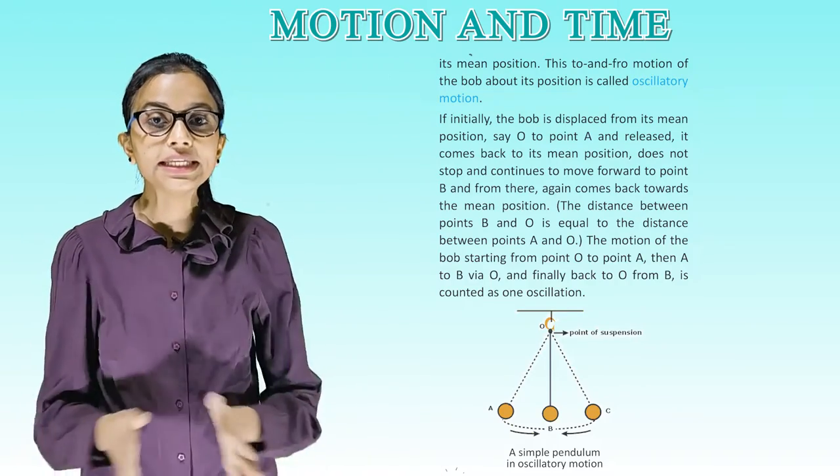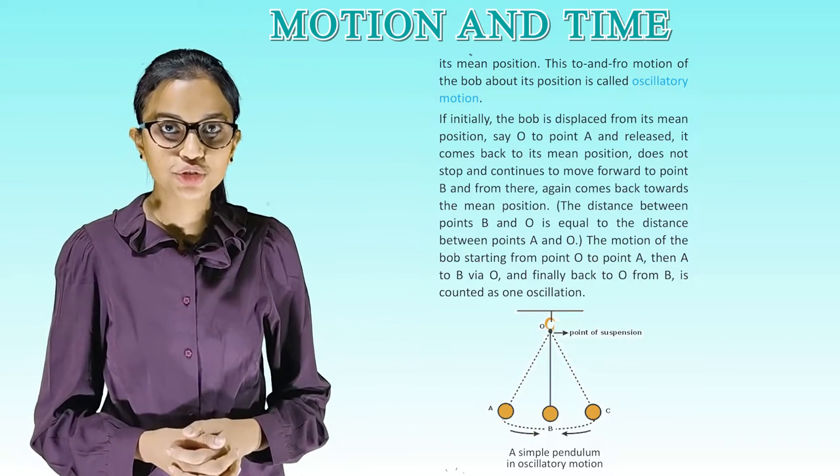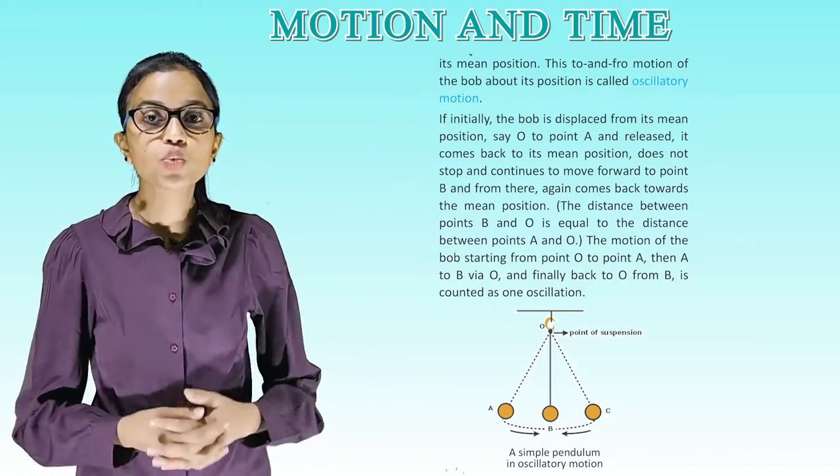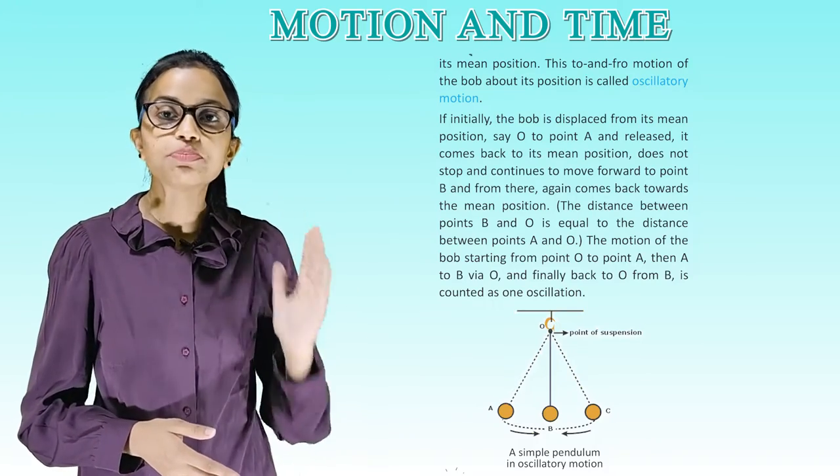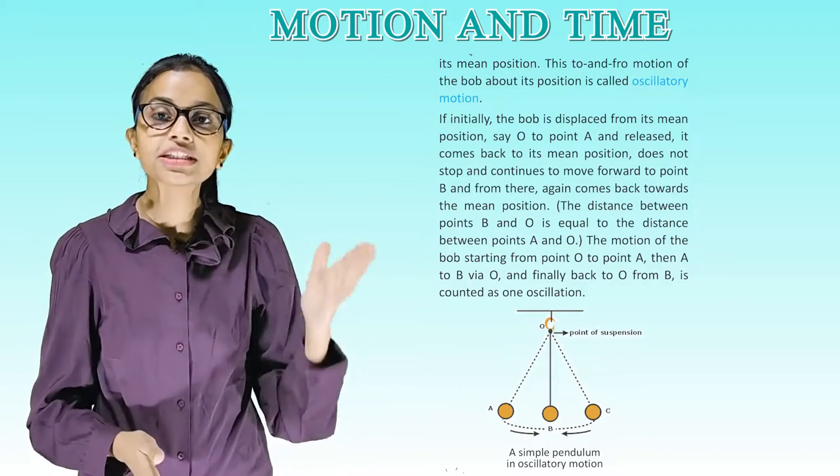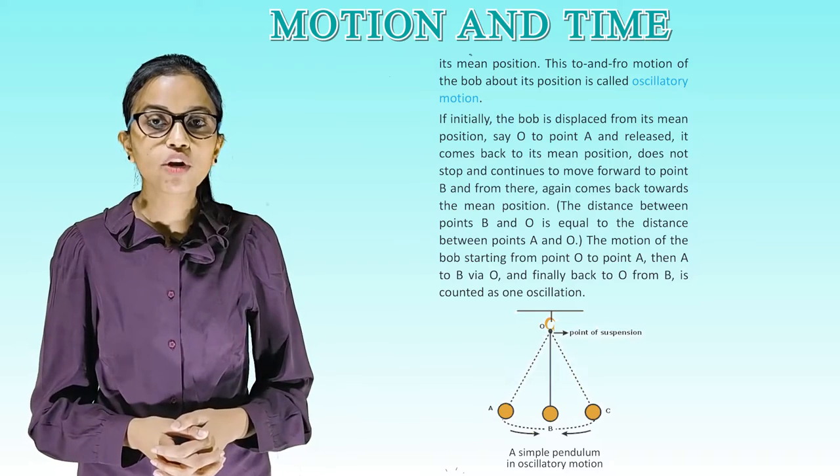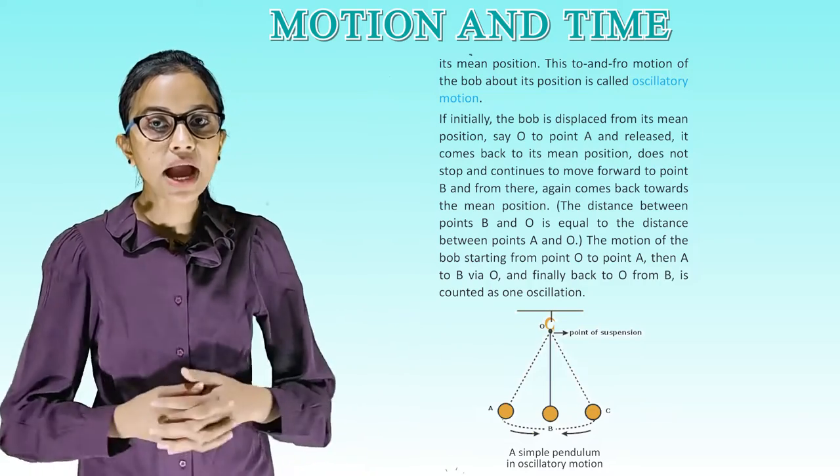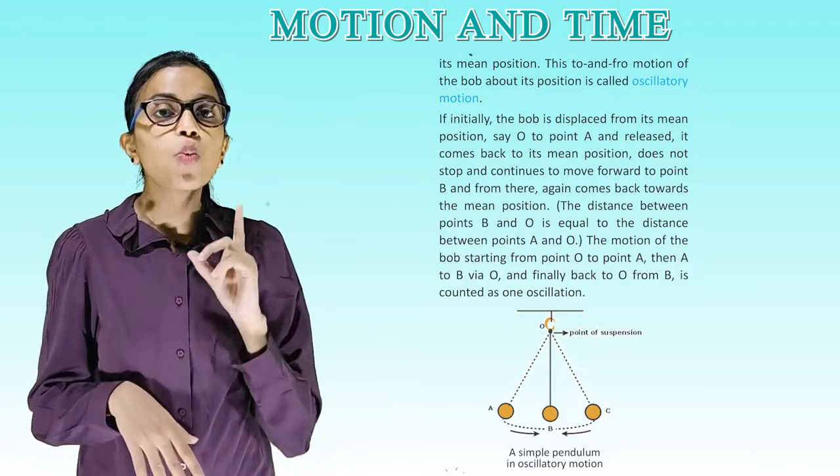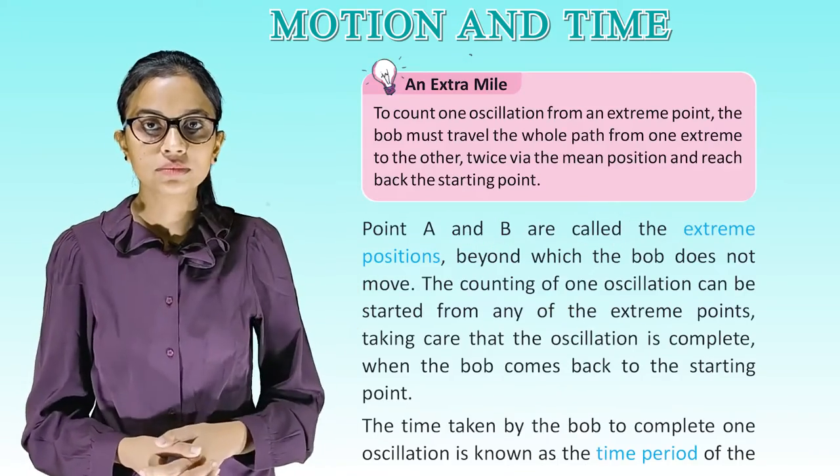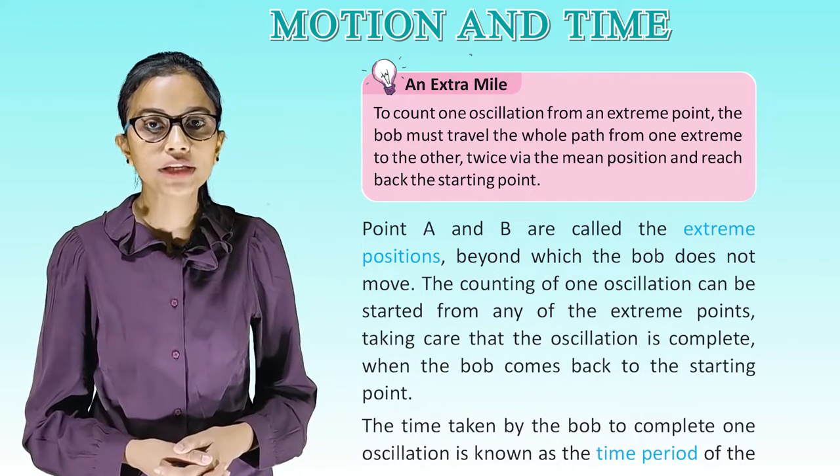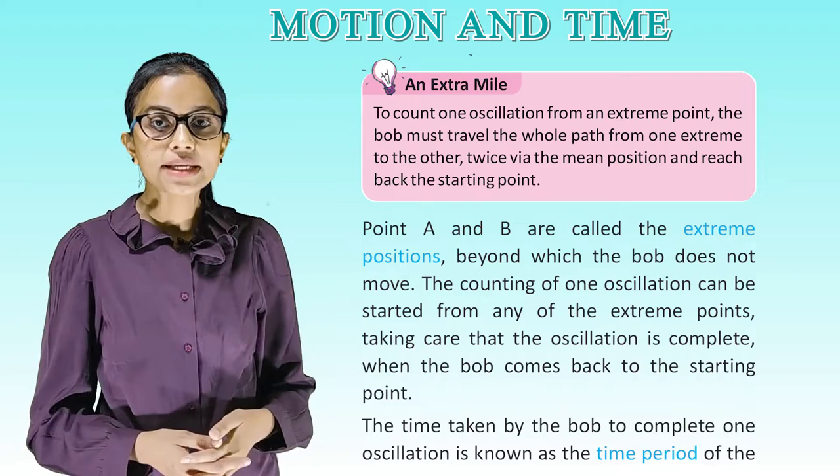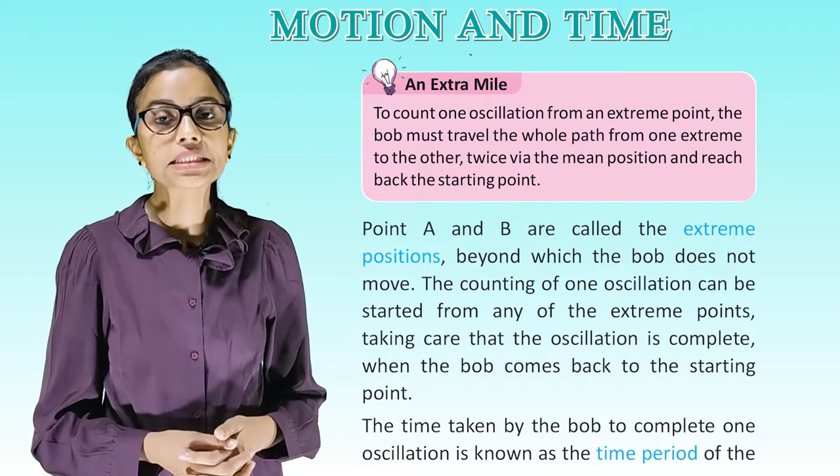This to and fro motion of the bob about its position is called oscillatory motion. If initially the bob is displaced from its mean position, say O to point A and released, it comes back to its mean position, does not stop and continues to move forward to point B from there. Again comes back towards the mean position. The distance between points B and O is equal to the distance between point A and O. The motion of the bob starting from point O to point A, then A to B via O, and finally back to O from B is counted as one oscillation.